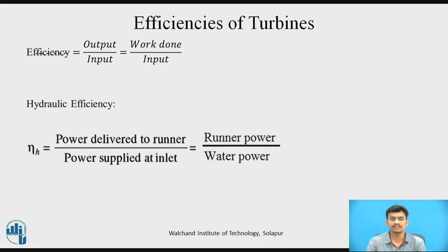Now we will see the efficiencies of turbines. Efficiency is the ratio of output to input. The hydraulic efficiency of a turbine is defined as the ratio of power delivered to the runner to the power supplied at the inlet. Power delivered to the runner is called runner power, and power supplied by the water jet is called water power. So hydraulic efficiency is the ratio of runner power to water power.